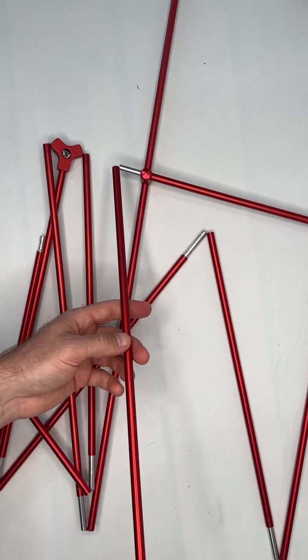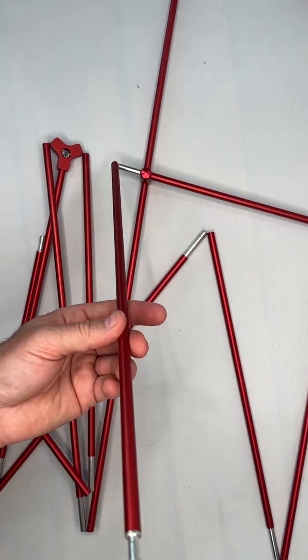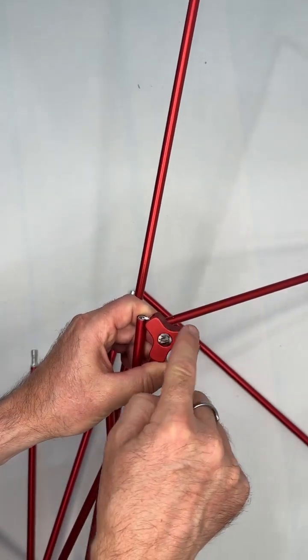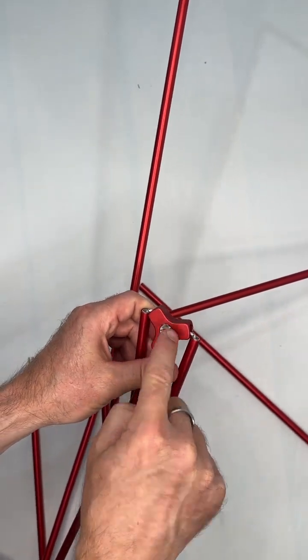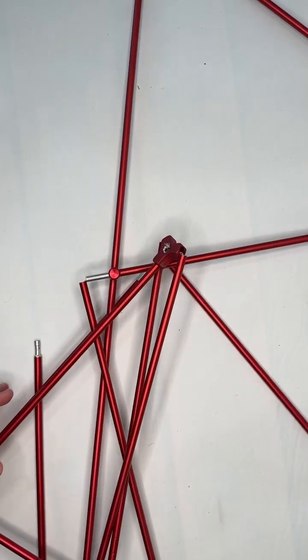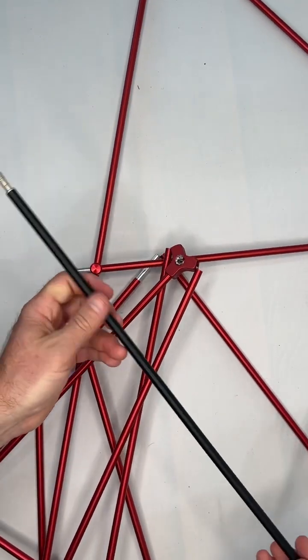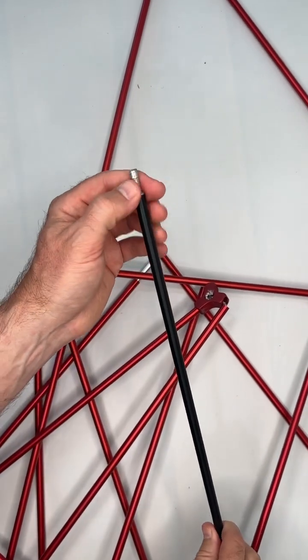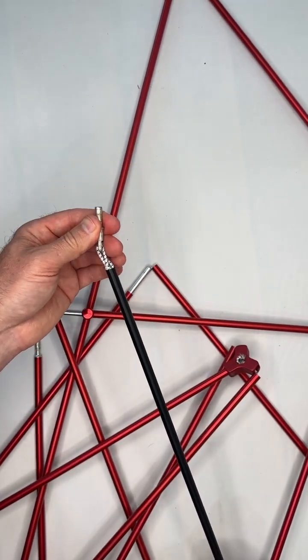Just make sure you let us know which side it is too if you do need a pole replacement, because we do have the black ends also. Follow the same process for getting into the black ends.